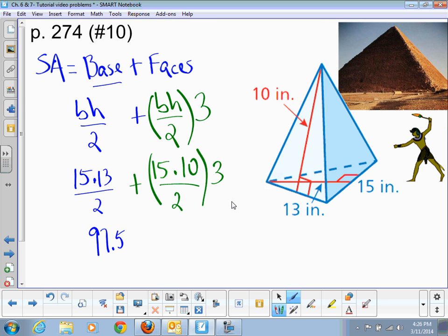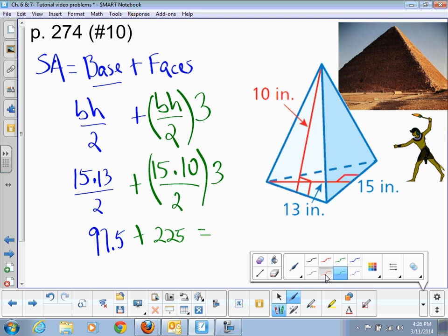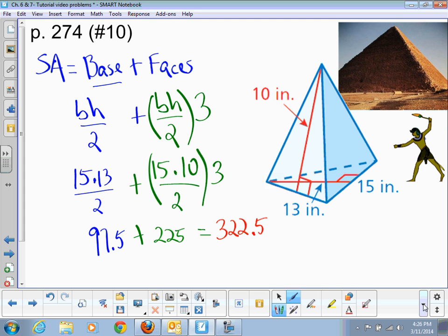And then we take that, multiply by 3. So 15 times 10, 150 divided by 2 is 75, and 75 times 3, I believe, is 225. So now we will add those together and we're going to come up with a final answer of 322.5. And it's inches, and since this is area, it's squared. So that's surface area.